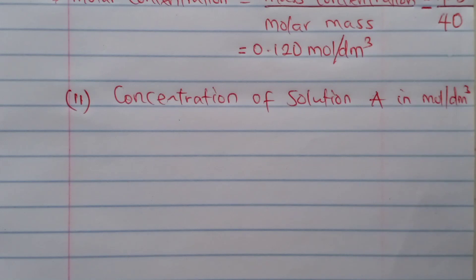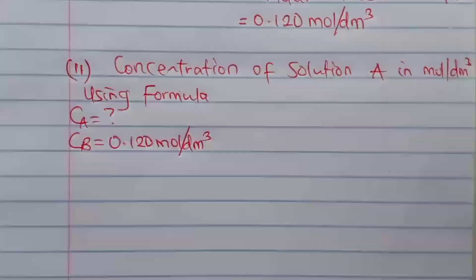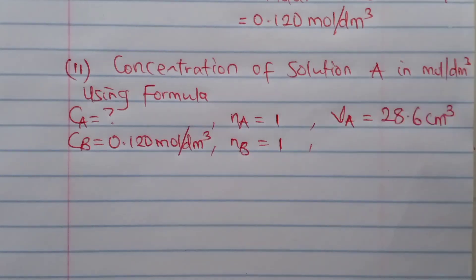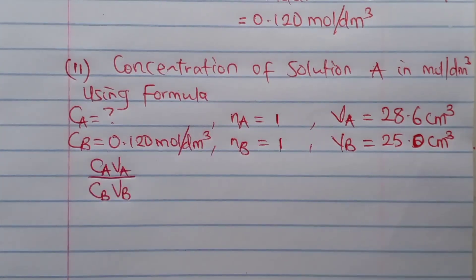Using the formula CA·VA / CB·VB = NA/NB, we make CA the subject by cross multiplication. VA is the average volume of the acid used. VB is the volume from the pipette, which is 25.00 cm³.